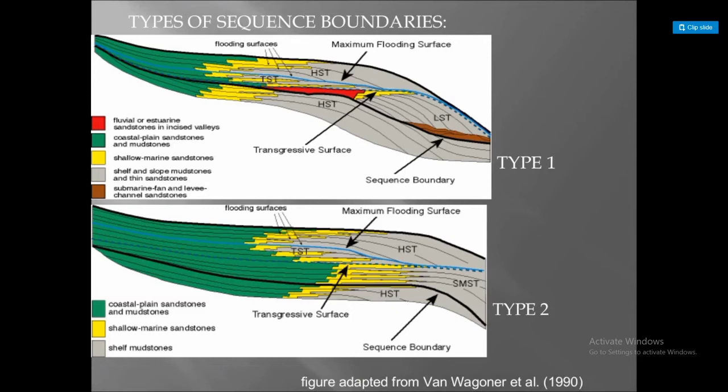There are two types of sequence boundaries: Type 1 and Type 2. In the images you can see the Highstand Systems Tract (HST), the Transgressive Systems Tract (TST), and the Lowstand Systems Track (LST), all of which are illustrated in the slides.